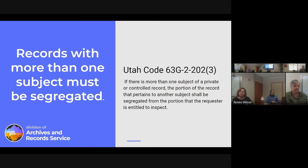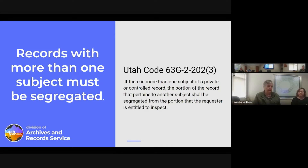Section 202 of GRAMA talks about who has access to private records. For example, the subject, a guardian, or someone with power of attorney has access to private records. But if there is information about more than one subject in the record, then the information about another subject must be redacted before providing the record to the requester.